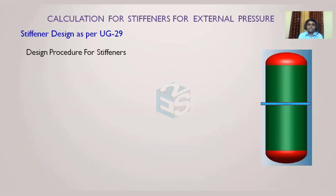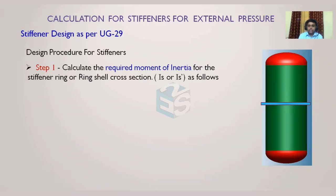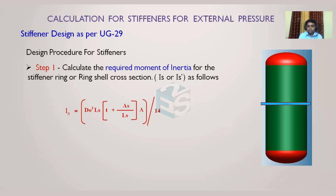In the design procedure, Step 1 is to calculate the required moment of inertia. There are two formulas: one for the stiffener ring only and another for the stiffener ring and shell section together. For the ring only, the formula is: Do² × Ls × (t + As/Ls) × factor A, divided by 14. This gives the required moment of inertia of the stiffener ring alone.